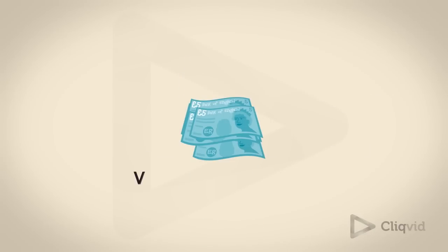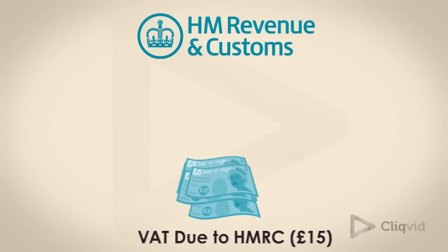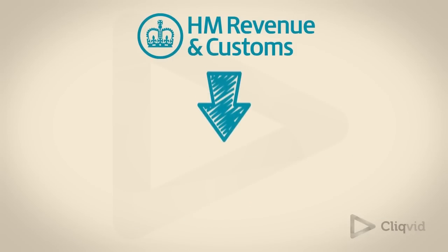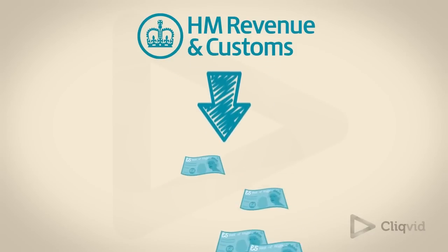The difference between what they've charged on sales and what they've paid on purchases must be sent to HM Revenue & Customs. If this is a negative figure, then it means they've more to reclaim than they've charged, and HM Revenue & Customs will send the business the amount due.